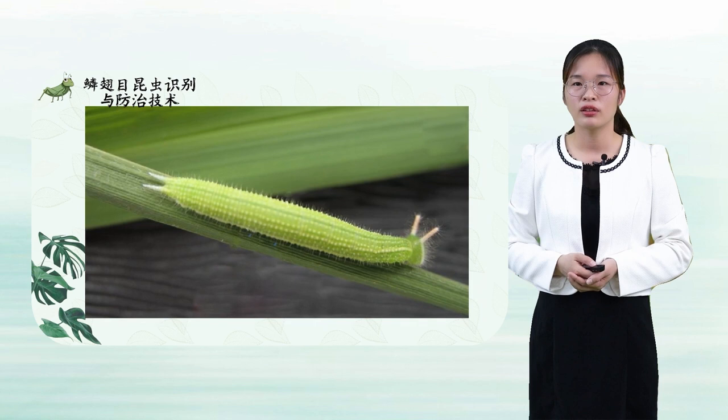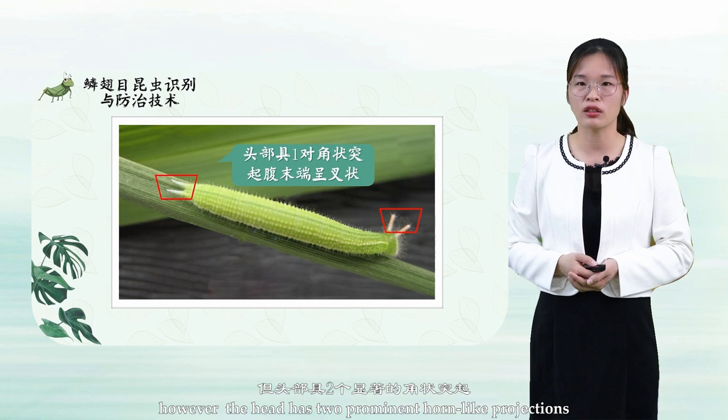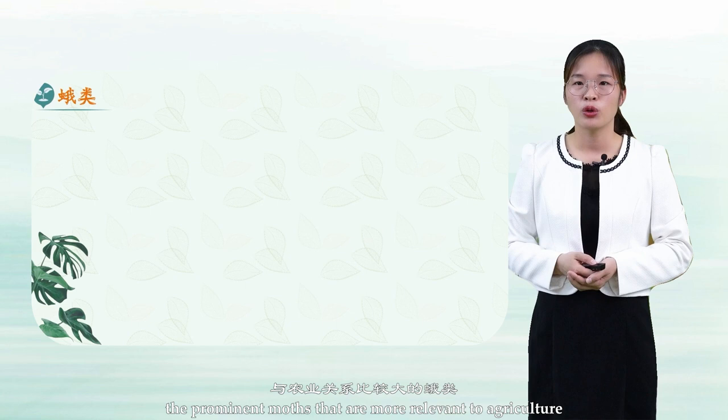Satyridae: like markings on wings. The larvae are fusiform, resembling the shapes of Hesperid larvae. However, the head has two prominent horn-like projections, and the ventral end is fork-shaped. The prominent moths that are more relevant to agriculture are the following families.